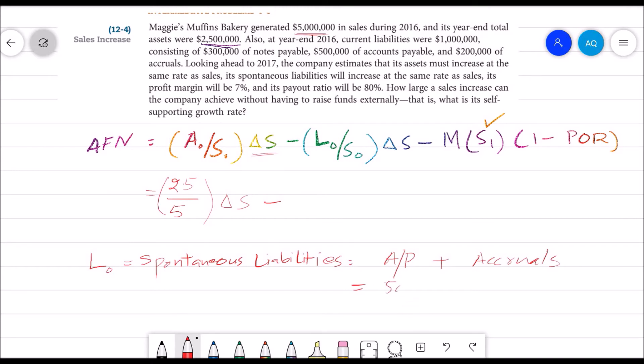So our accounts payable are $500,000, while our accruals are $200,000. So our total spontaneous liabilities are $700,000, or we can write them as $0.7 million. Because I am already using millions, so for simplicity, $0.7 million divided by $5 million, change in sales. Profit margin is given as 7%, S₁ is unknown, and payout ratio is 80%.